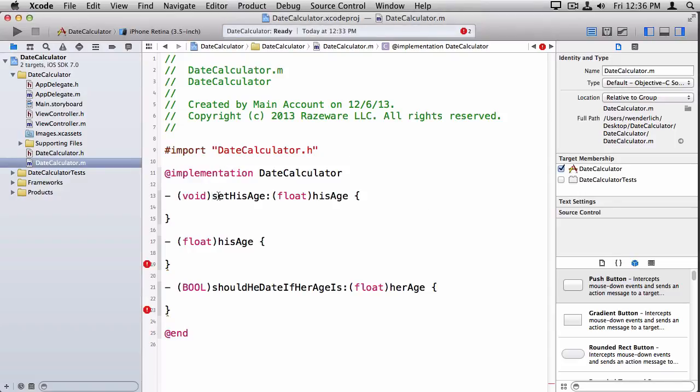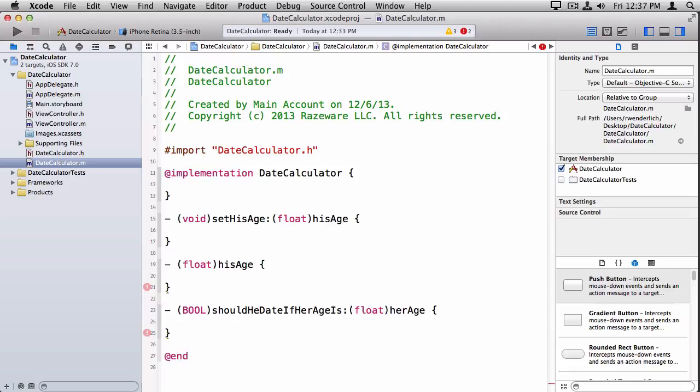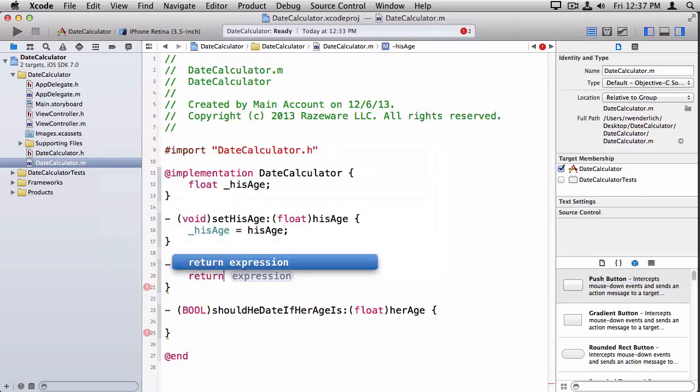So in order to implement setHisAge and hisAge, we're going to need a private instance variable in order to keep track of his age. So you remember the syntax to do that. To make a private instance variable, you put an open curly brace after date calculator, and inside here you can list out all your private instance variables. So we want one for his age. And what I like to do is when I make a private instance variable, I like to prefix it with an underscore. And actually this is the convention Apple uses too, so if you use this, you're in good company. So it just makes it really clear to me that when I see an underscore, I know it's an instance variable. So now that we have our instance variable, we can say _hisAge equals the hisAge passed in. And similarly to return hisAge, we just return _hisAge.